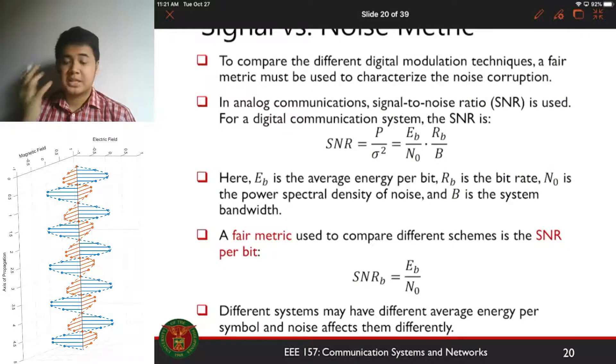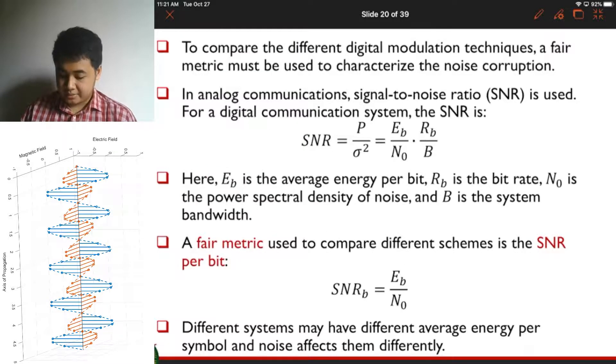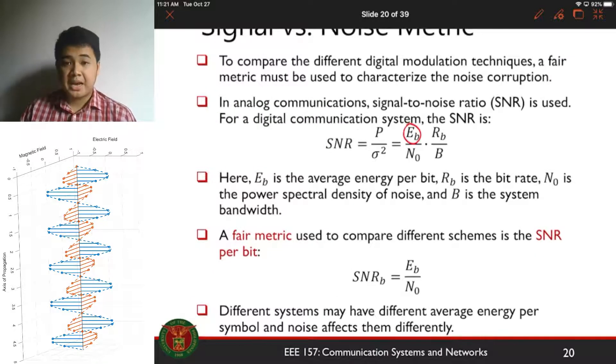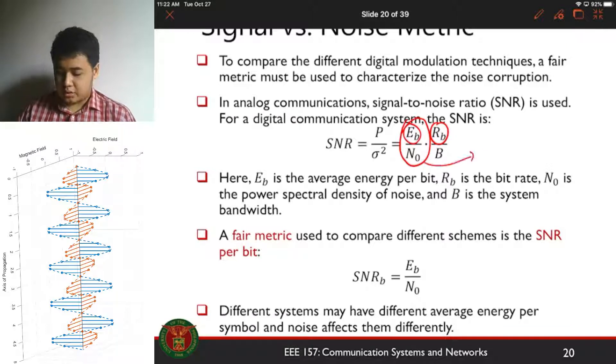The power of the transmitted signal is equal to the energy per bit multiplied by the bit rate. So recall this from week 8 or is it week 9 on digital modulation. So the power of your transmitted signal is equal to the energy per bit multiplied by the bit rate. So I want you to focus on this term right here. The term Eb over N0 is called the SNR per bit.